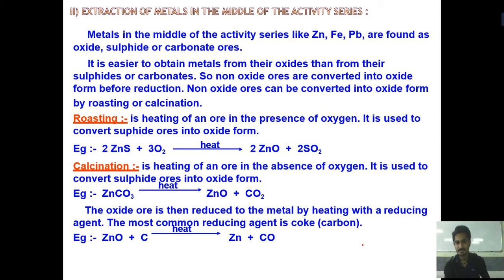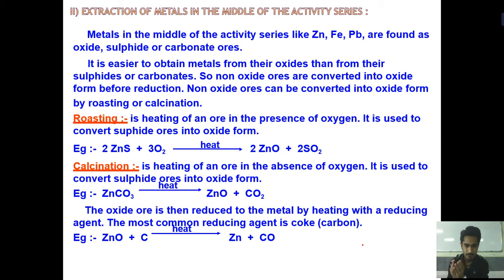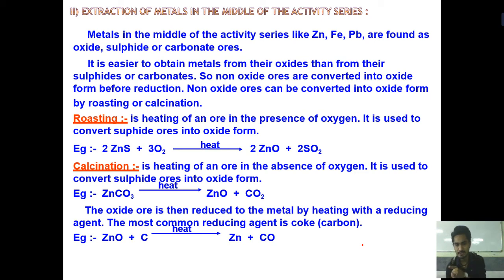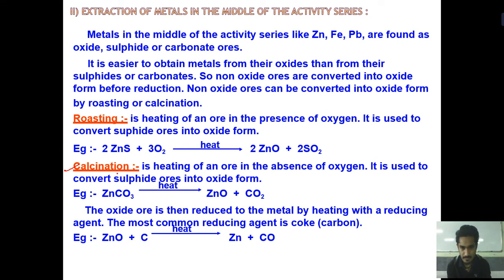Now for medium reactivity series metals, there are two processes. Zinc, for example, is not found in pure form — it is found as zinc sulfide. So we perform roasting since it is in sulfide form, and then we can obtain zinc in pure form. The other important process is calcination.